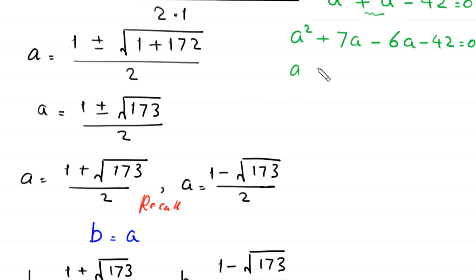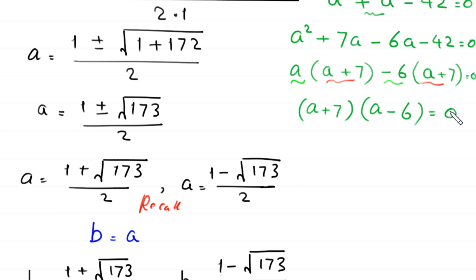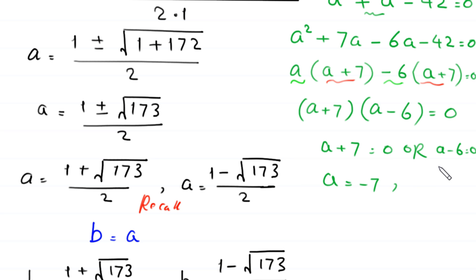From the first two terms we factor out a, giving a times a plus 7. From the last two terms we factor out negative 6, giving negative 6 times a plus 7. So the factored form is a plus 7 times a minus 6 equals 0. Therefore either a plus 7 equals 0, giving a equals negative 7, or a minus 6 equals 0, giving a equals 6.